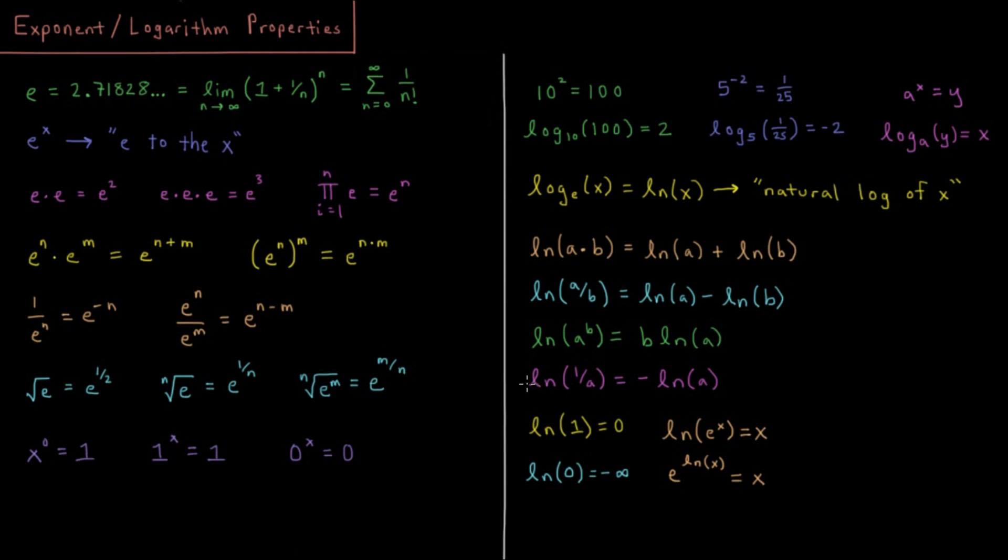So then correspondingly, I can show that the log of 1 over a is equal to the negative log of a. And very important property that the log of a to the b is equal to b times log a. So if I have some number where I take it to a power, I can pull that power out, and it multiplies the log out in front.